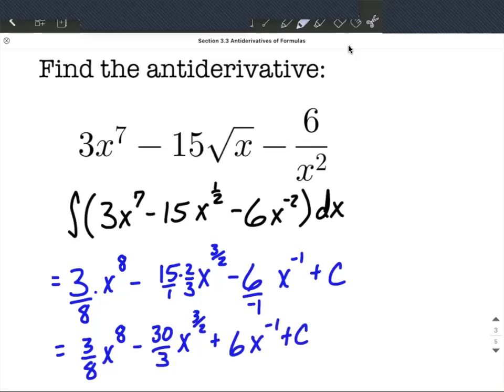The only other reducing down we may want to do is that negative 30 divided by 3. So final answer here, 3 eighths x to the 8th power minus 10 x to the 3 halves power plus 6 x to the negative 1 plus c.